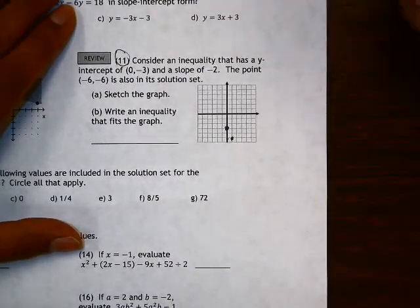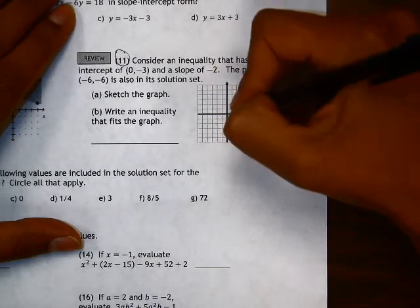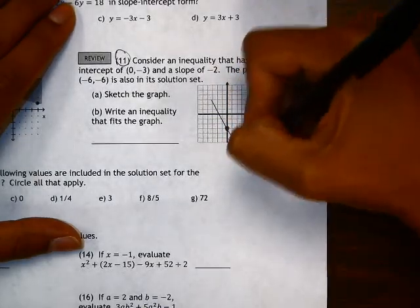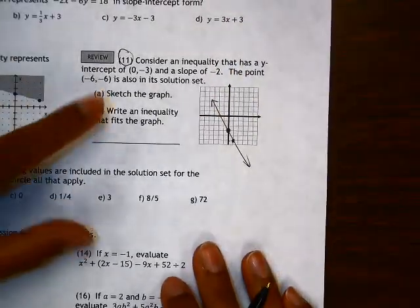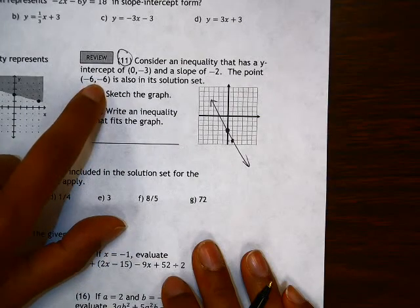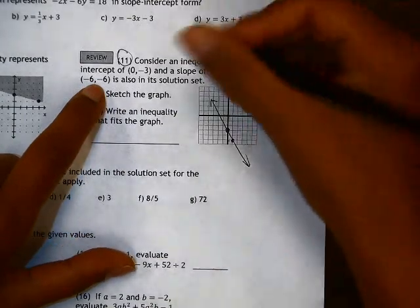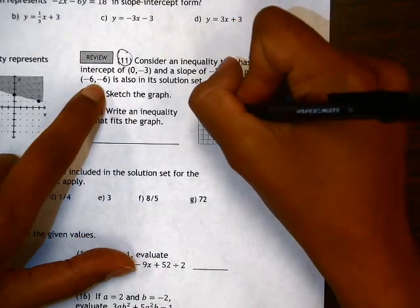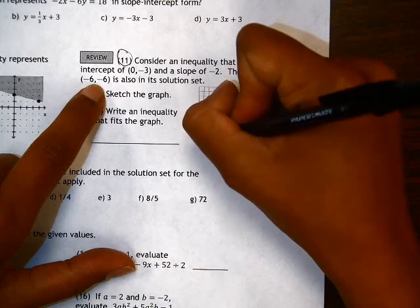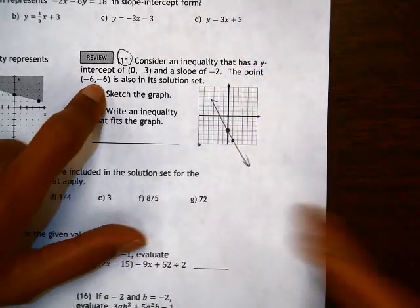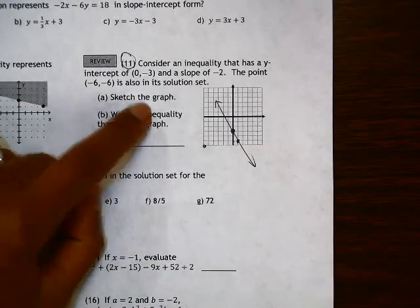So first I'm going to draw a line. And another piece of information we were given is that the point negative 6, negative 6 is also in the solution set of this inequality. So we sketch the graph.